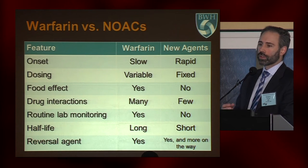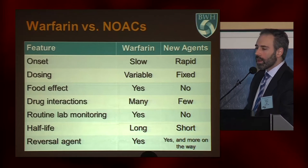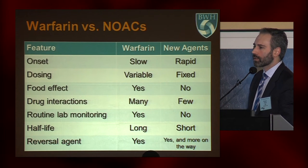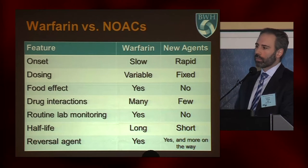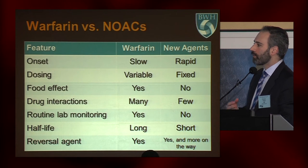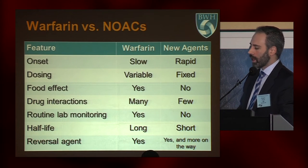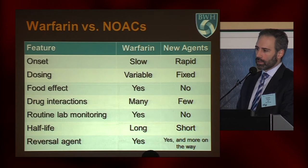When it comes to reversal agents, although we have ways of reversing warfarin, there's always been this knock against the NOACs that there aren't antidotes available. Now I can say that Pradaxa, which is dabigatran, has a very effective antidote called Praxbind or idarucizumab. And for the direct Xa inhibitors, there should be an antidote available within the year.